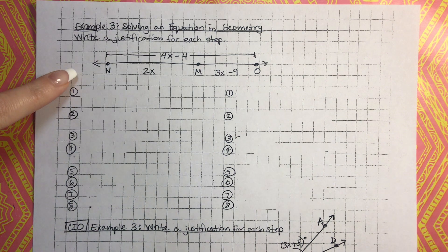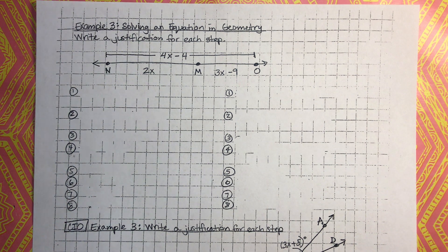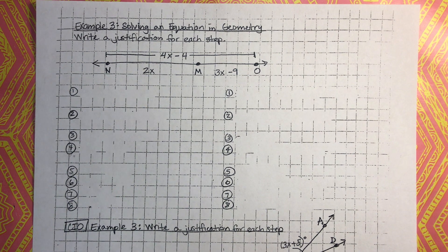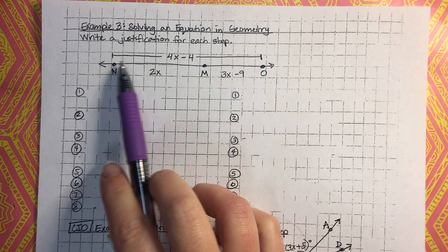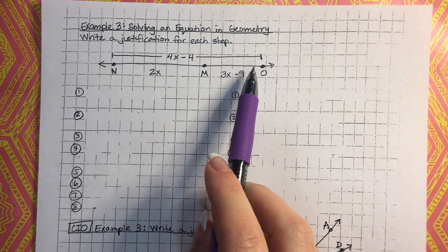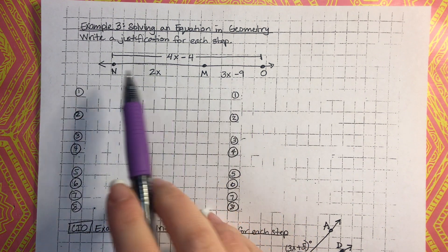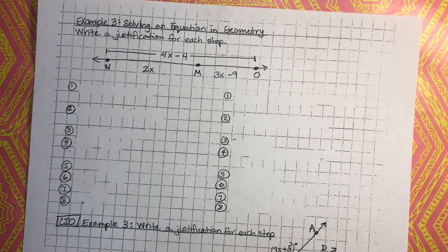When you see this picture, it should be something you remember from the past — this is from chapter 1. Whenever you see something like this, something should just pop into your brain. When you have a piece, a piece, and a whole, if you're thinking about the segment addition postulate, you would be correct. We're going to use that to write an equation so we can solve for x.